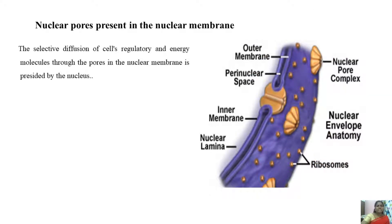Nuclear pores present in the nuclear membrane perform the function of selective diffusion of molecules. The regulation of energy molecules through the pores in the nuclear membrane is overseen by the nucleus. Here you can see the outer membrane, the perinuclear space, inner membrane, nuclear lamina, ribosomes, and the nuclear pore complex — a structure showing the nuclear envelope anatomy.